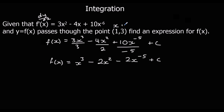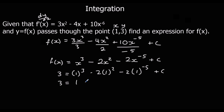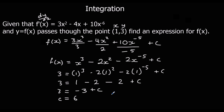Now we use the coordinates — so x = 1, y = 3. 3 equals 1³ minus 2 times 1² minus 2 times 1⁻⁵ plus c. Since 1 to any power is 1, we have 3 equals 1 minus 2 minus 2 plus c, which is minus 3 plus c. So c must be 6. Therefore f(x) = x³ − 2x² − 2x⁻⁵ + 6.